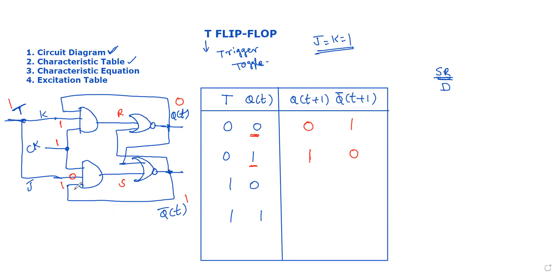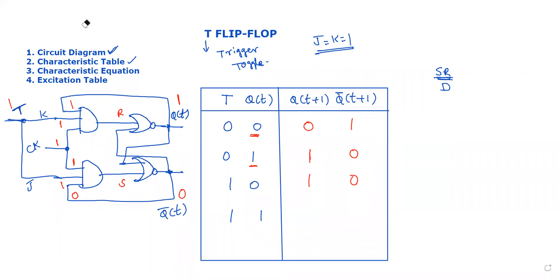For T equals 1, Q(t) equals 0: output is 1. For T equals 1, Q(t) equals 1: output Q(t+1) becomes 0 — the complement. So in the 1-1 case the two values change, giving output 0. This completes the characteristic table for the T flip-flop.